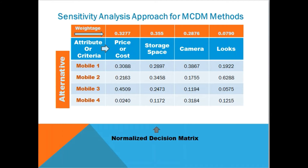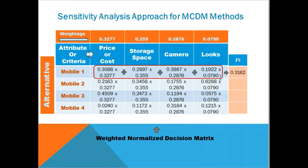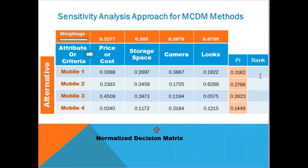This is the normalized decision matrix. Let's use WSM — the Weighted Sum Method — to calculate the final preference score and the ranks associated with those scores. In WSM, we multiply the weights with the performance measure and then add all those values to get the PI value.